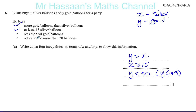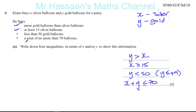A total of no more than 70 balloons means the number of silver balloons plus the number of gold balloons must be no more than 70 — they can be 70 or less. So X + Y ≤ 70. Those are the four inequalities described in the question.